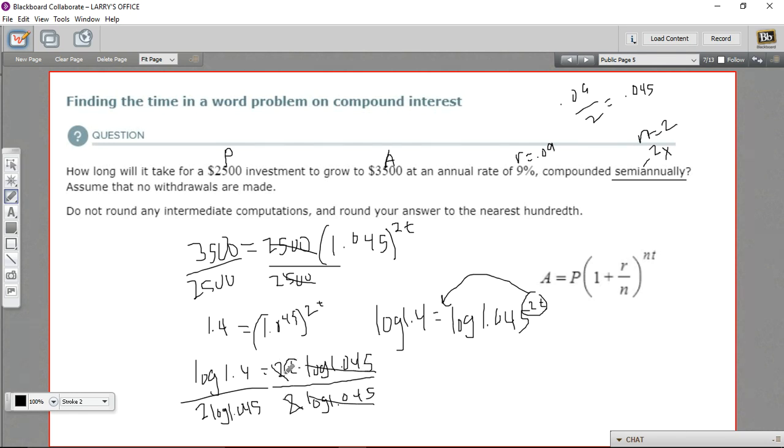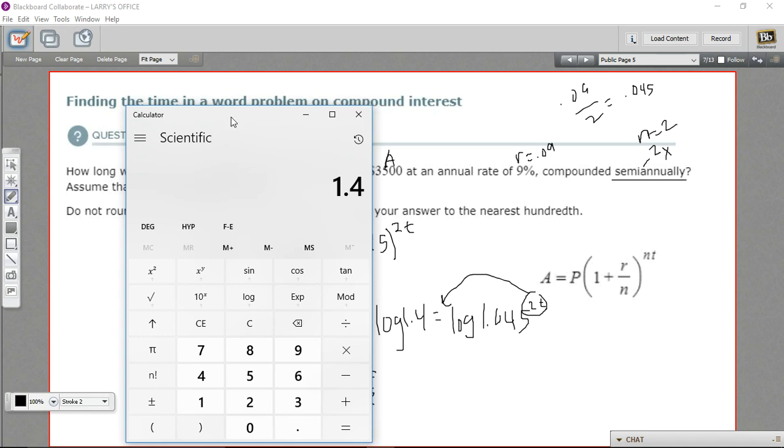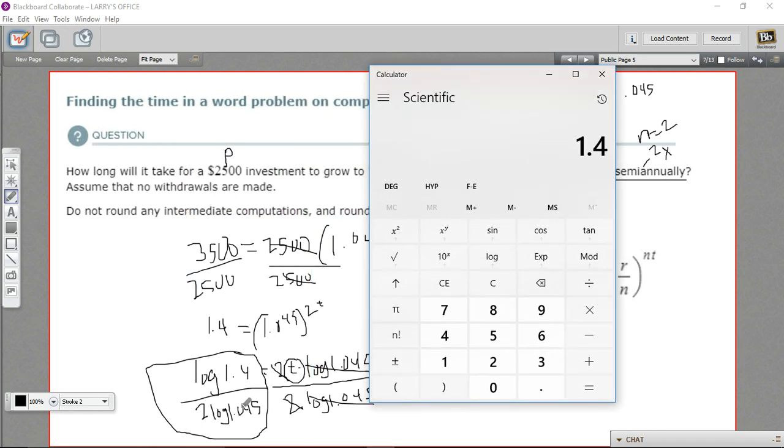So if you're going to give an exact answer you'd give that, but we want to actually calculate this, so let me pull out the calculator. So I'm going to calculate the bottom first and store that in memory, then I'll calculate the top and then divide by what's in my memory. So I've got 1.045, we're going to take the log of that and then multiply that by 2, and we'll store that in memory. All right, now let's take the top, 1.4, and take the log of that, and then we're going to divide by memory recall.